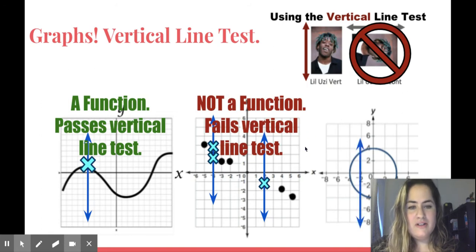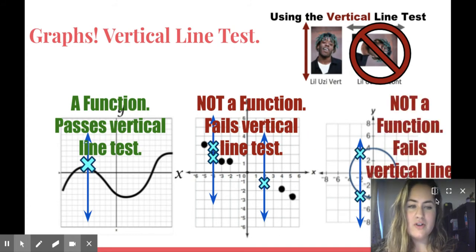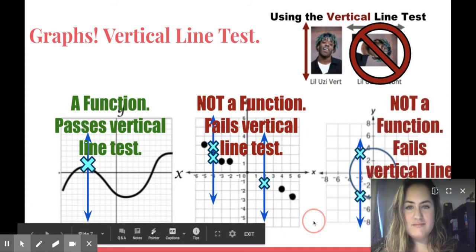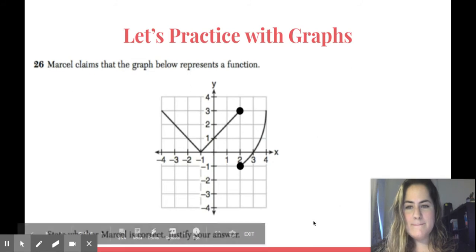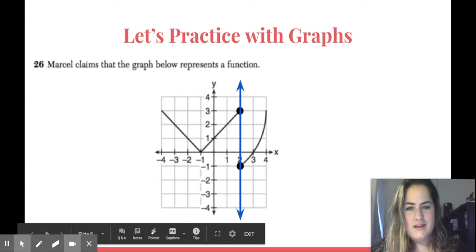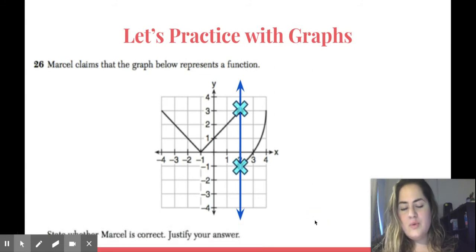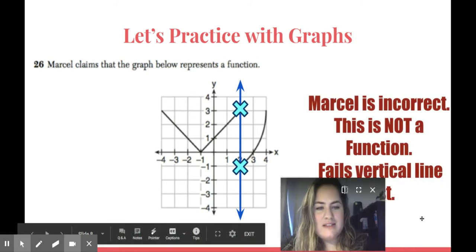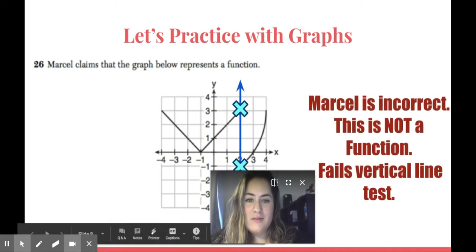Similarly with my circle. If I draw a line here, it hits twice. It fails the vertical line test. Not a function. Let's practice again. Marcel claims the graph below is a function. It's a graph, so I'm going to use my vertical line test. Does it pass or fail? Well, if it hits twice, it fails the vertical line test. Not a function. Marcel is incorrect.